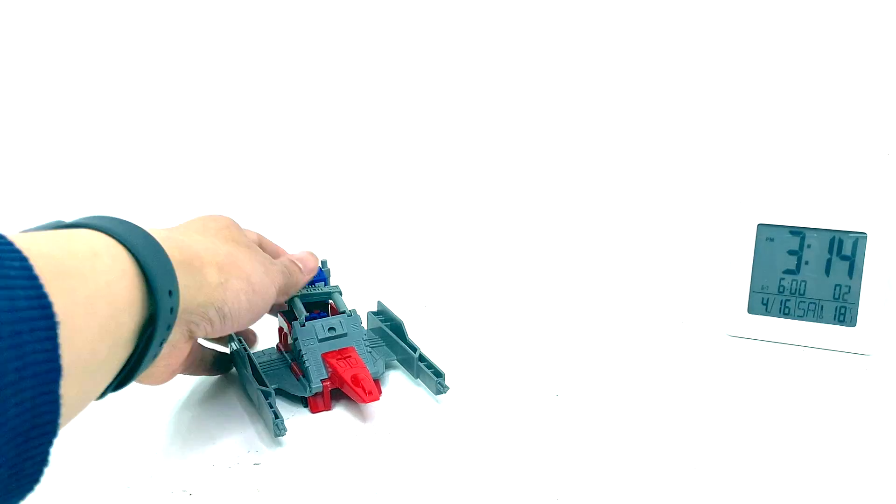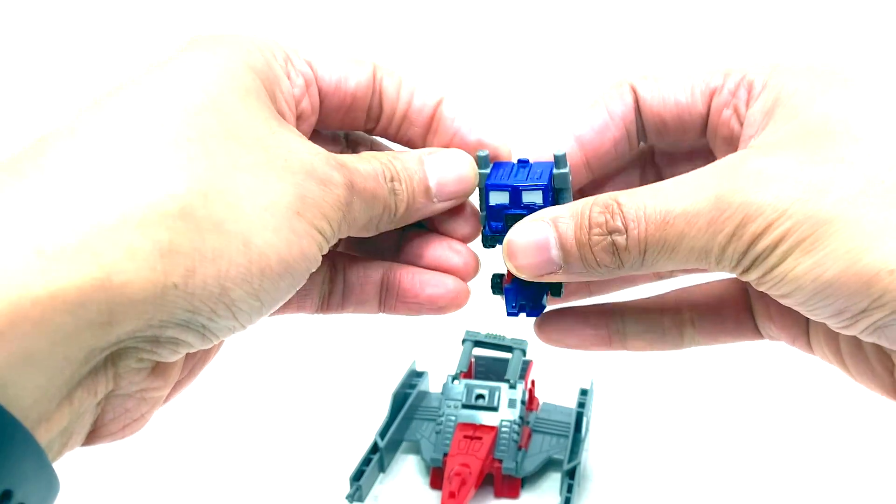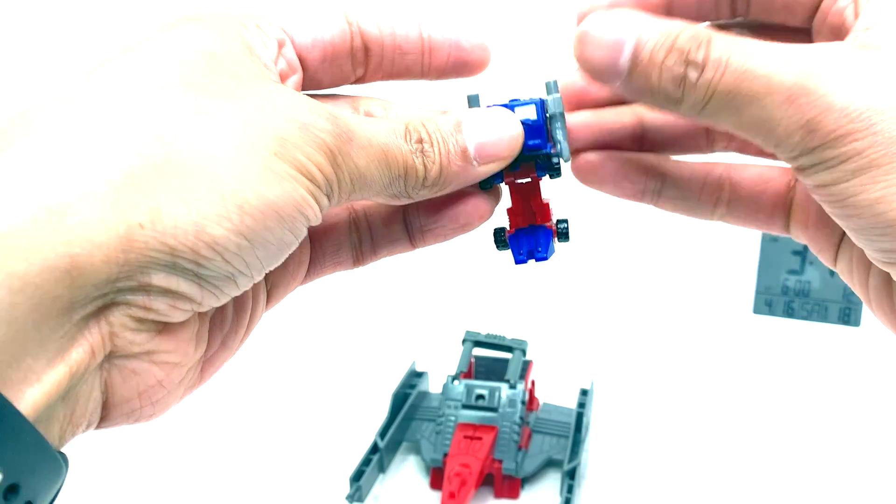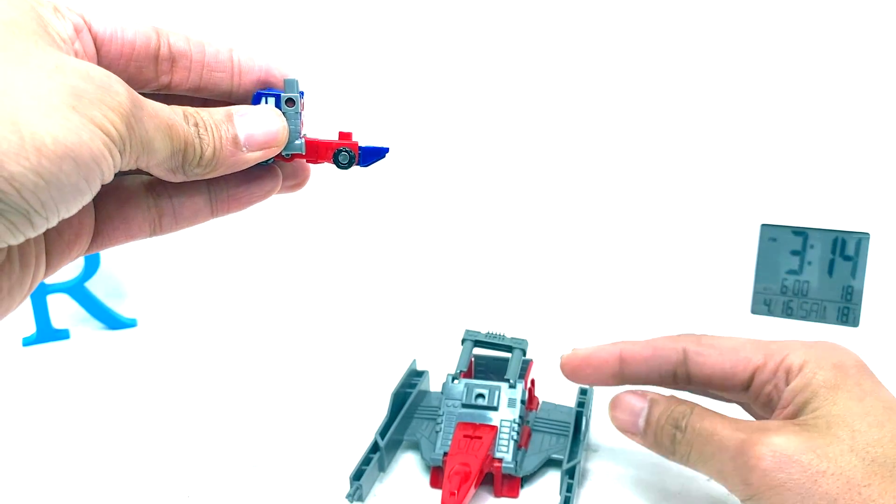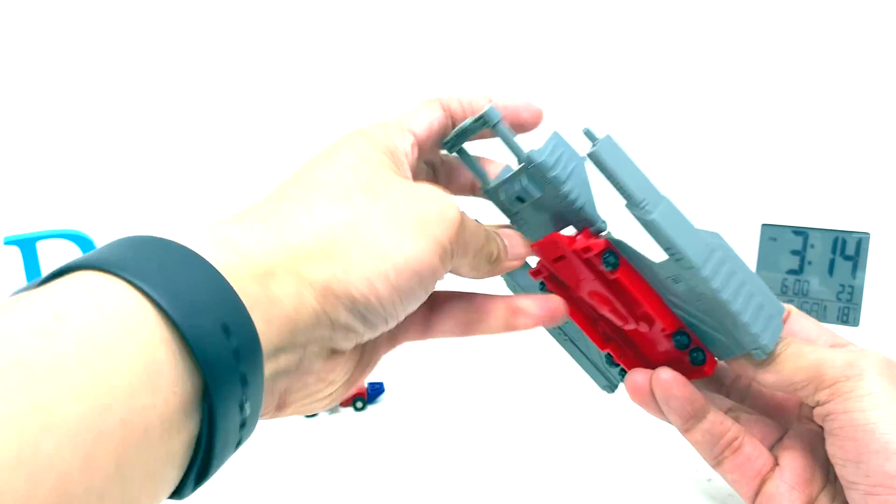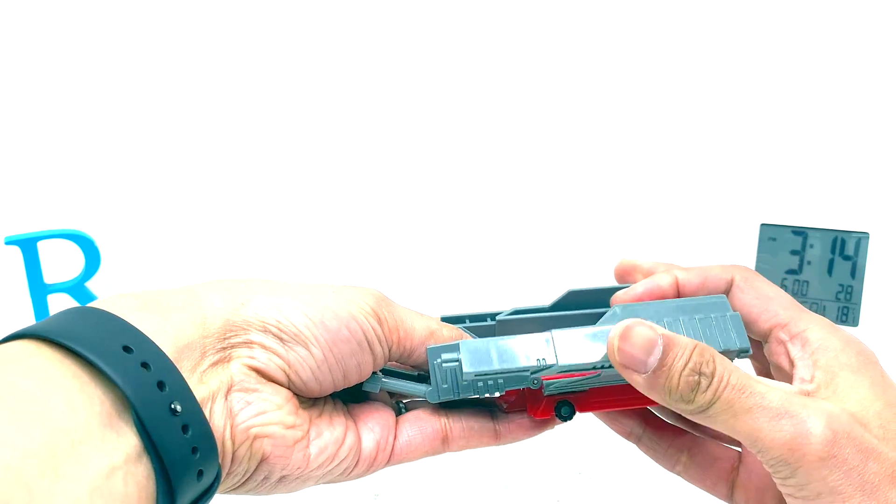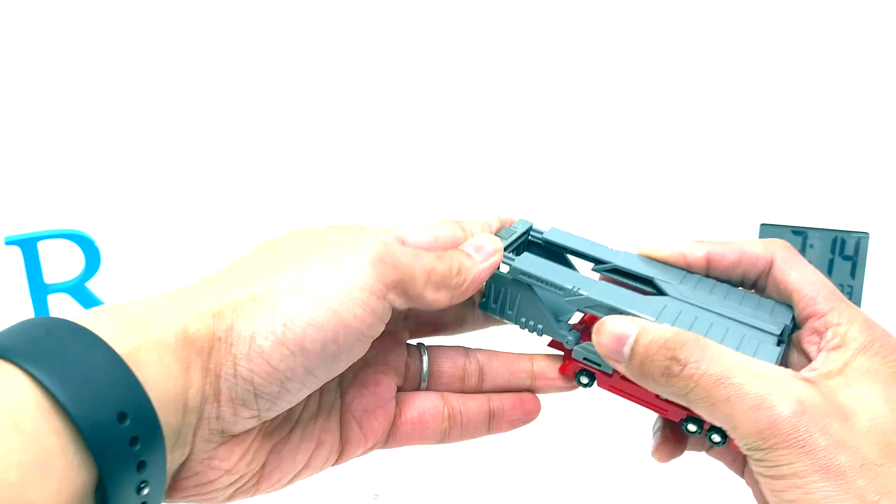Transformers G1 Overload, G1 Zone Roadjet, pretty cool, very happy to have this in the collection. Let's transform him now back into vehicle mode. Simple transformation, that's about it. And then let's transform this back into trailer mode. Close this up and tab these in or peg those in.